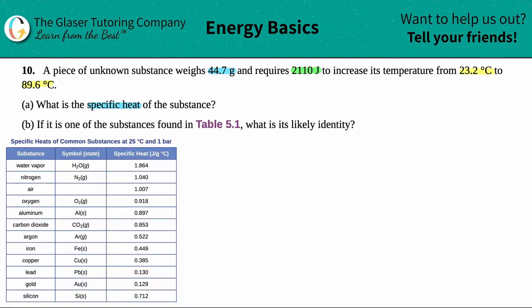The first thing they say is a piece of unknown substance weighs 44.7 grams. G is a gram value and gram is a mass, so technically I have an m here, m for mass, and they told us that this is 44.7 grams. Maybe I should just preface this by saying this is all for letter a. They told us it requires 2110 joules, and a joule value is a unit for heat. They're saying it's requiring some amount of heat energy to increase the temp.